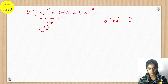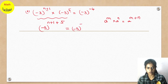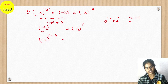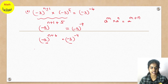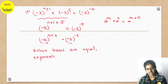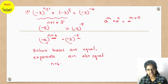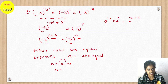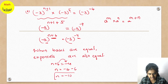So (-3)^(n+1+5) equals (-3)^(-4). Simplifying the power: (-3)^(n+6) equals (-3)^(-4). The bases are equal, so exponents are also equal: n + 6 = -4. Transposing 6 to the LHS gives n = -4 - 6, so n equals -10 is the final answer.